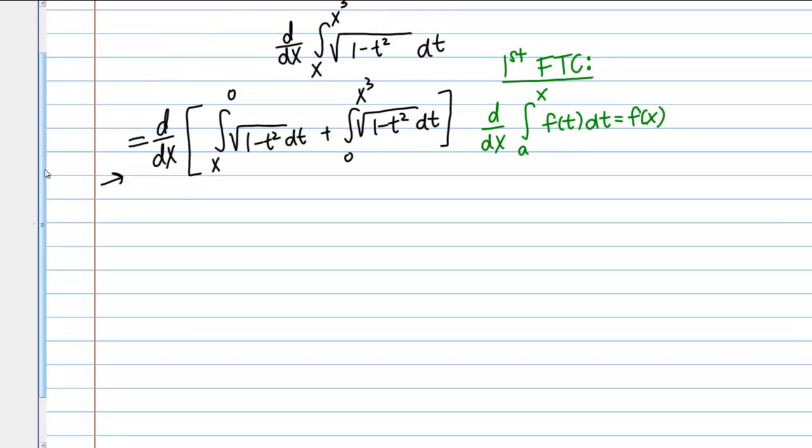The first integral here still isn't quite in the right form because it's X to 0 and it needs to be 0 to X. The number needs to be the lower bound. Fixing that's not too bad. All I have to do is flip the limits of integration and add a negative. You can flip the intervals if you add a negative sign out front. That's one of the properties of definite integrals.